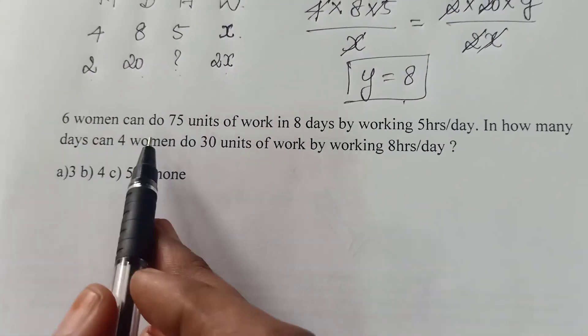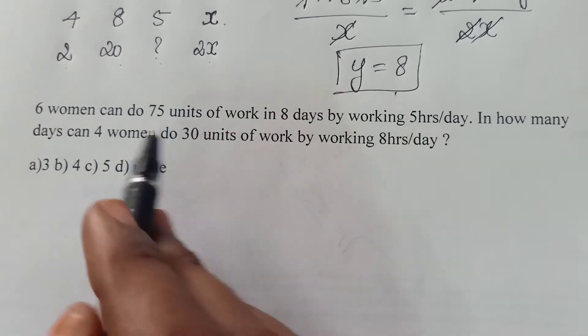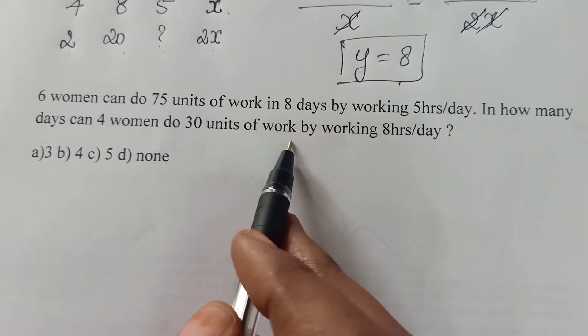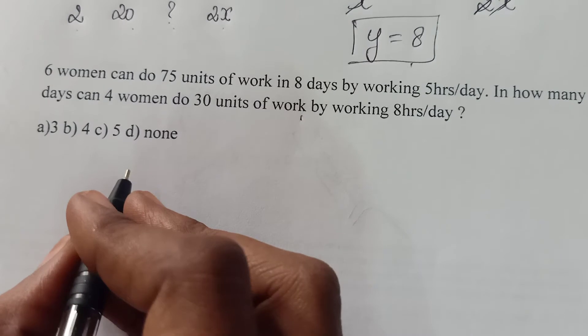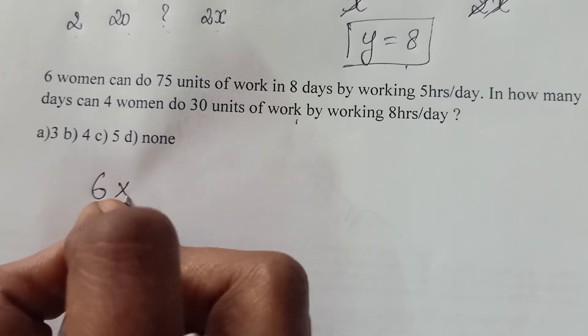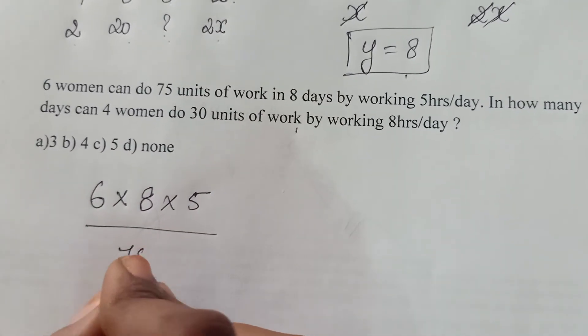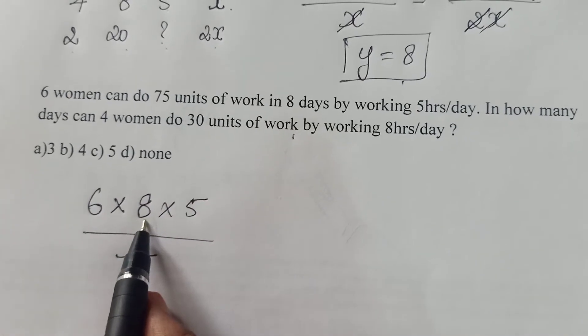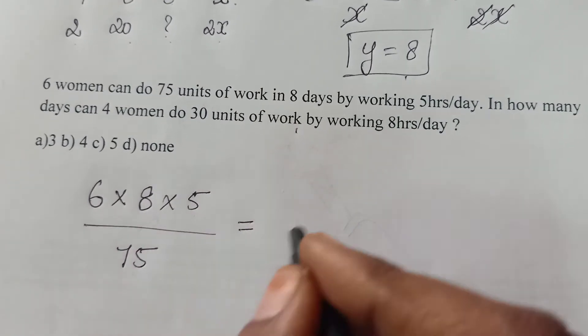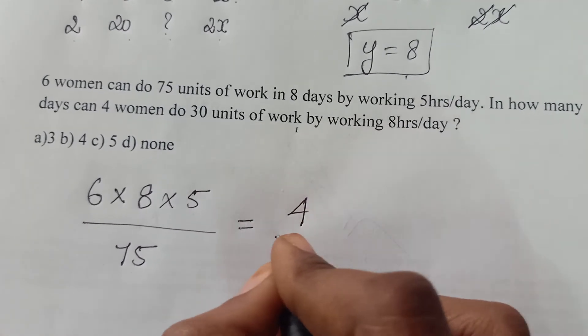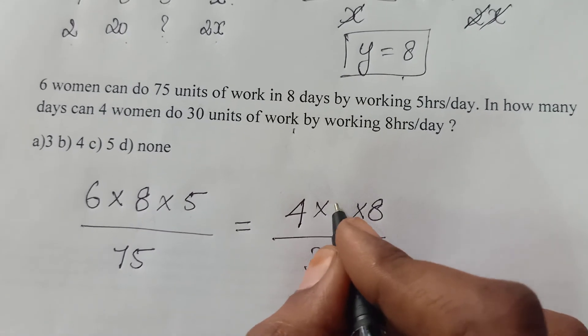We will move to the next question. 6 women can do 75 units of work in 8 days by working 5 hours a day. In how many days can 4 women do 30 units of work by working 8 hours a day? So in this question, I am going to write the answer very directly. That is 6 men, they are working 8 days and they are working 5 hours per day. They are completing 75 units. So 6 women is the number of men, 8 days number of days, and 5 is the number of hours. 75 is the work done divided by 75, which is W1. Whereas my question, 4 women they are completing 30 units, which is work, and they are working for 8 hours. My question is the number of days.